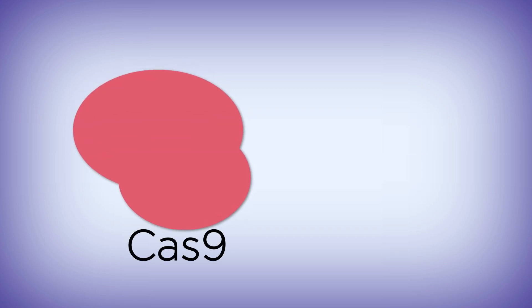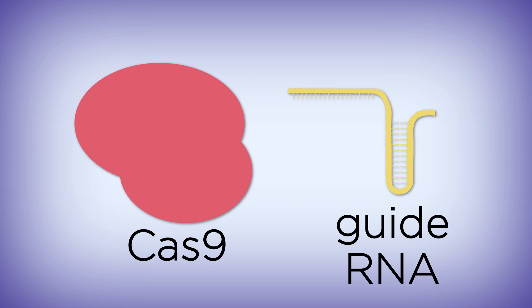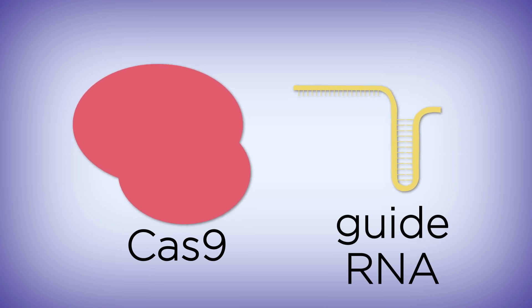The CRISPR-Cas system has two main parts: a Cas enzyme that can cut DNA, and a small RNA guide that controls where the Cas enzyme cuts.